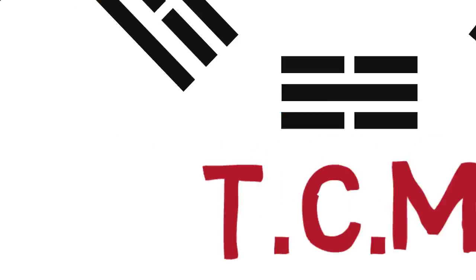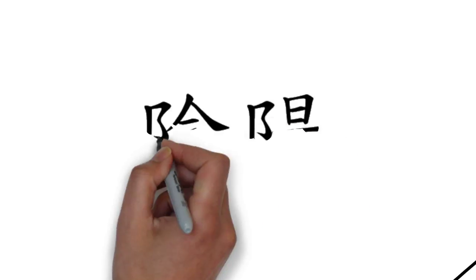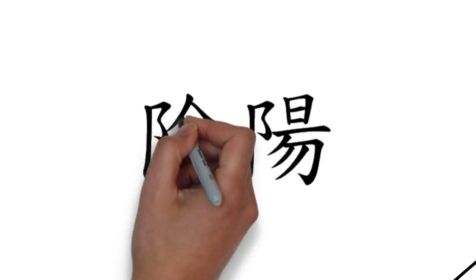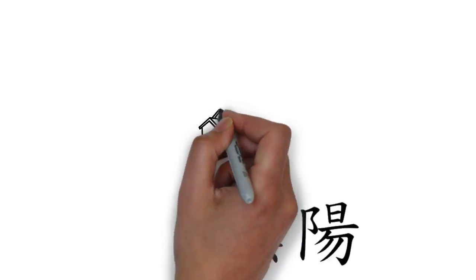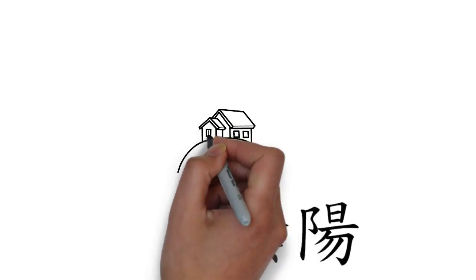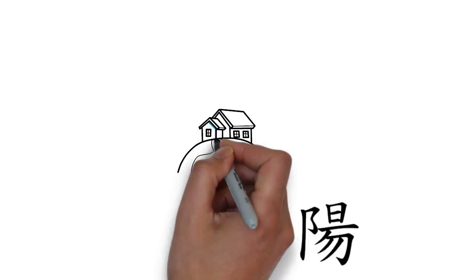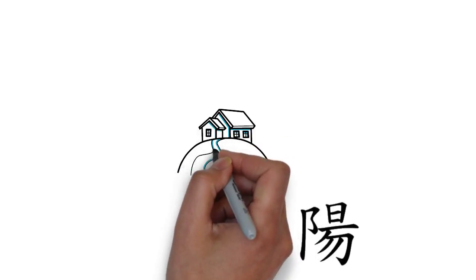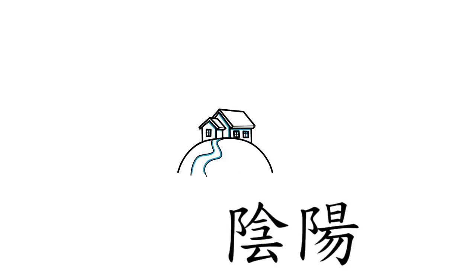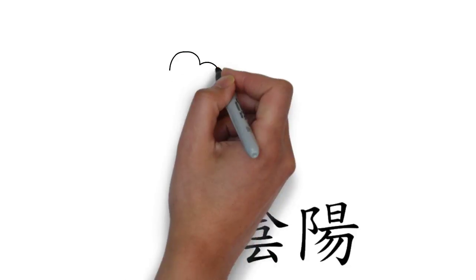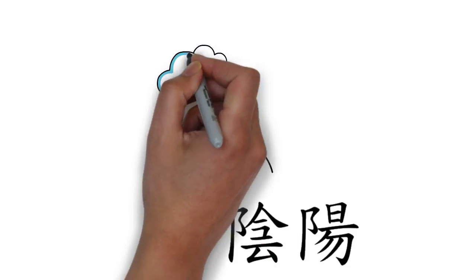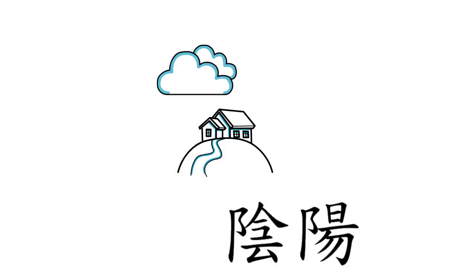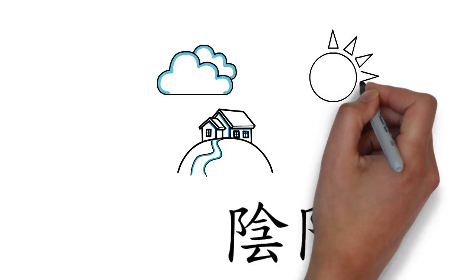So let's start with the basic explanation. These are the Chinese yin yang characters. The first character can be divided into two separate characters, with one representing a hill and the other representing a cloud. The second character represents the Sun and its rays of light.